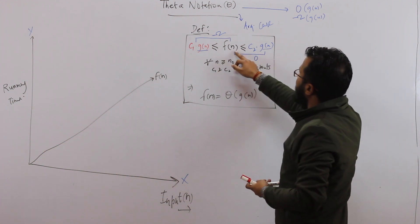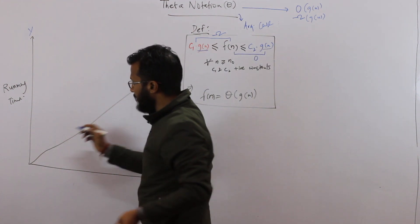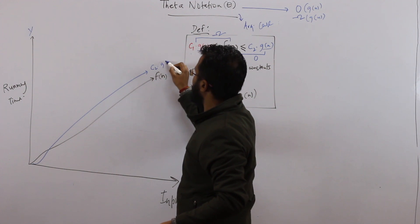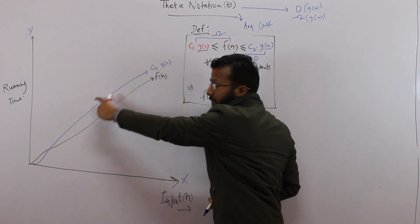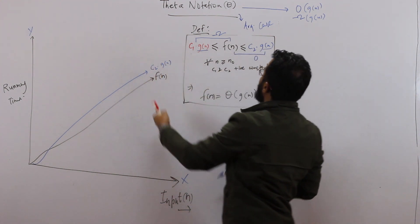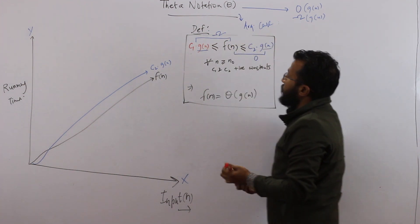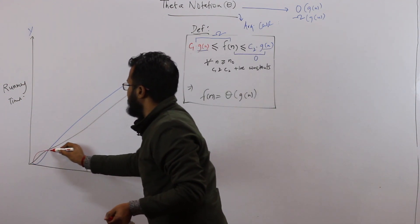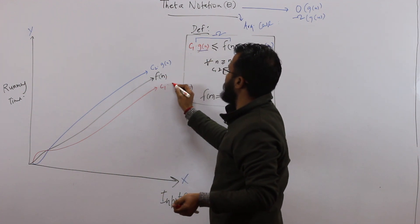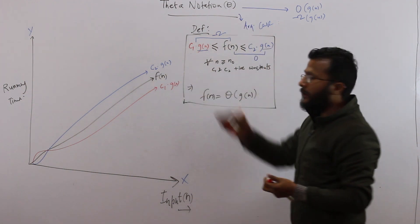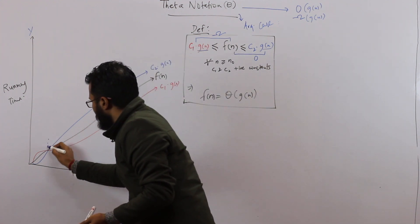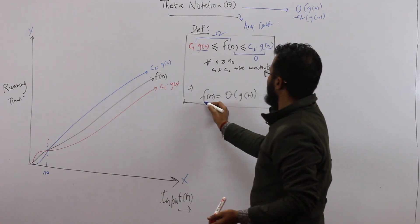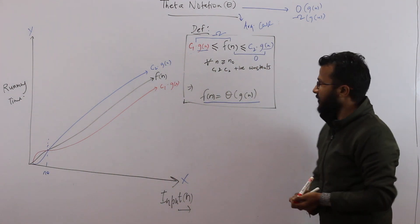To show this visually, f(n) must be upper bounded by c₂·g(n) — that's the Big-O part — and also lower bounded by c₁·g(n) — that's the Omega part. If we can show both for all values of n greater than or equal to n₀, then we can say that f(n) is theta of g(n). That is the definition of theta notation.